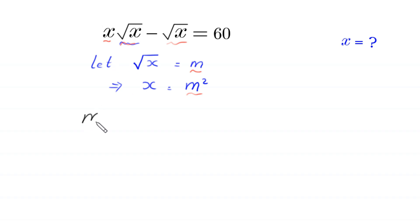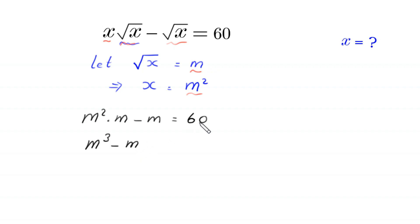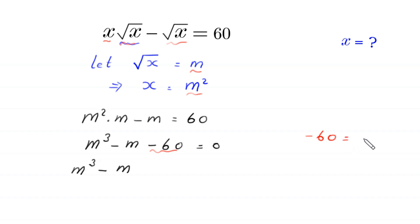The equation becomes m squared times m minus m equals 60, which simplifies to m cubed minus m equals 60. Moving 60 to the left side gives m cubed minus m minus 60 equals 0. We rewrite negative 60 as negative 64 plus 4.